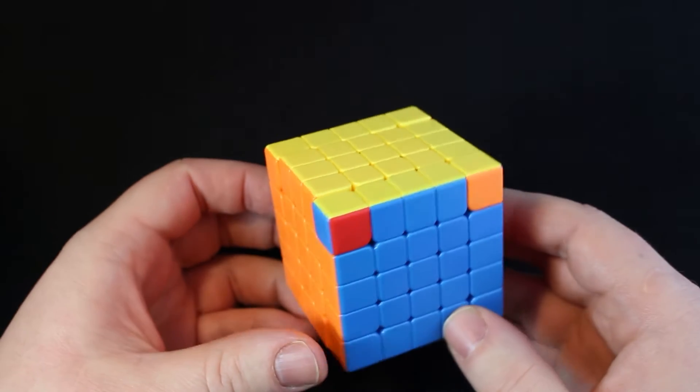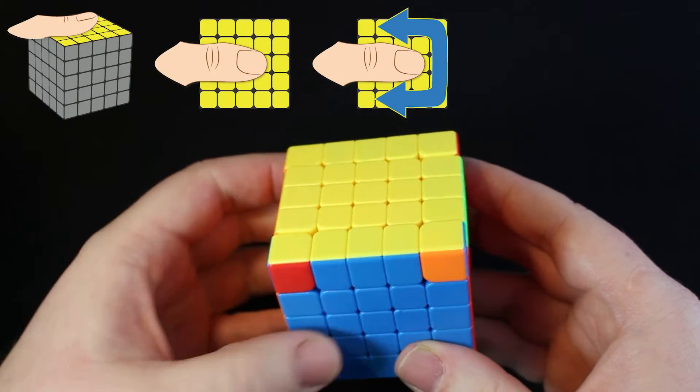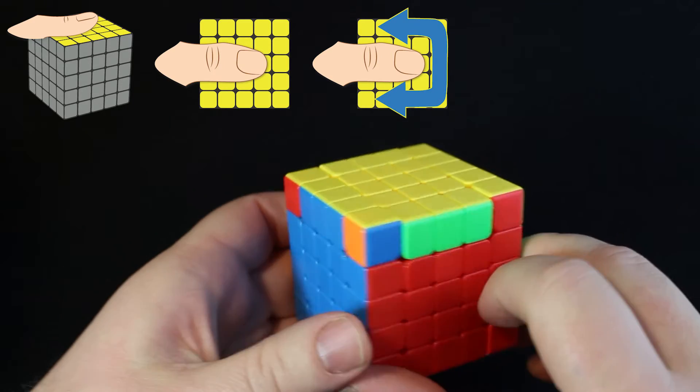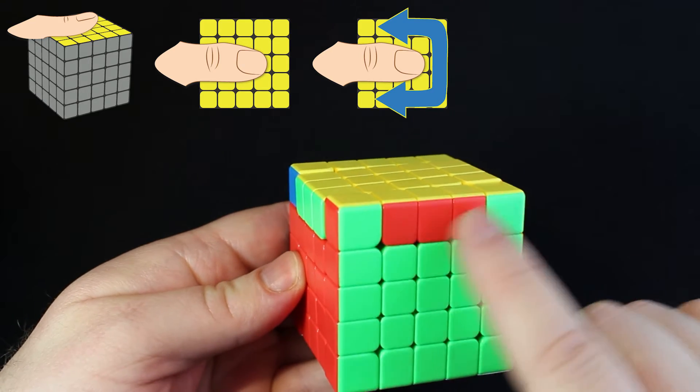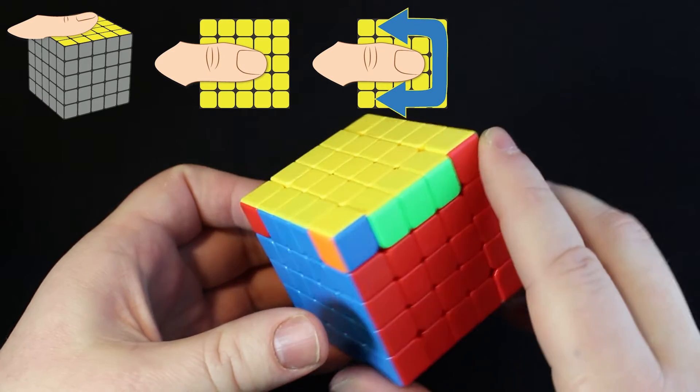First we do those thumb moves, which when you put your thumb on this yellow side. Let's look at the corners. These do not match. Orange and red don't match. Blue and red do not match. These do match. Green and green. Since those are matching corners, we put those to the back.